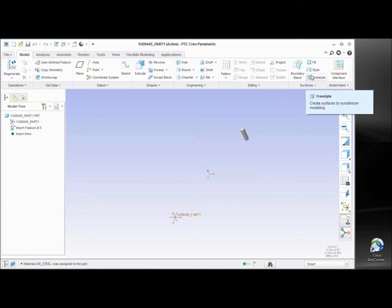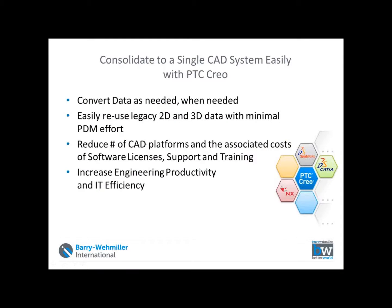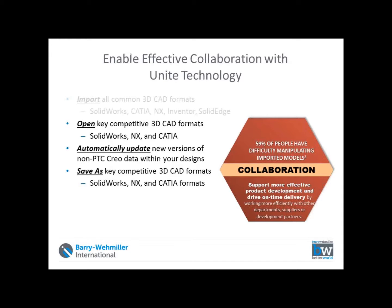So the idea of consolidate: convert data as needed. It gives us the ability to reuse legacy data — some of that legacy data may be in other formats, 2D and 3D — with minimal effort, because we can just import or open. We don't need CATIA seats, NX seats, or SOLIDWORKS seats. We can get rid of those licenses and maintenance costs. It makes engineering productivity much easier — you're not always converting objects and repairing geometry, especially when opening parts in their native formats.